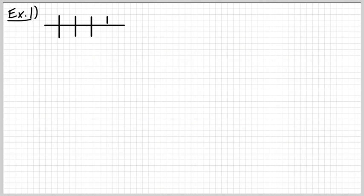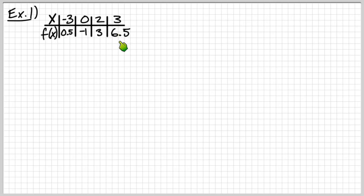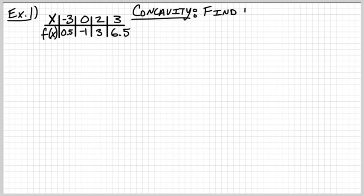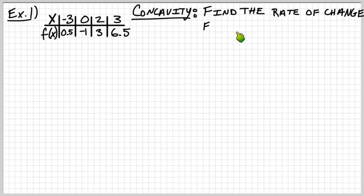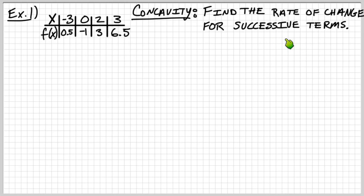Okay, let's look at the first example. I'm going to make a little table with x and f(x). My x-coordinates are negative 3, 0, 2, and 3. Y-coordinates are 0.5, negative 1, 3, and 6.5. Without doing anything else, we're going to try to say: is this concave up or concave down? Here's how you do that algebraically. To evaluate concavity, the goal is to find the rate of change — the slope — for successive terms. Successive means in order, so x's go from smaller to bigger.